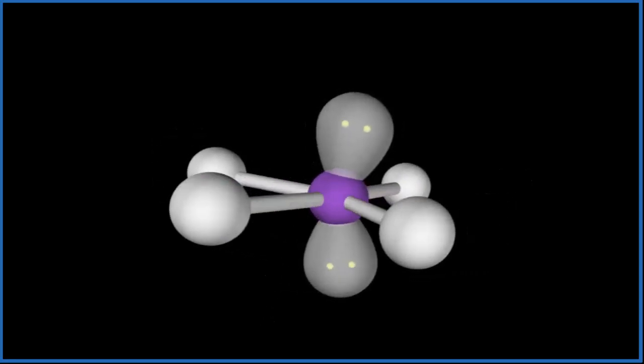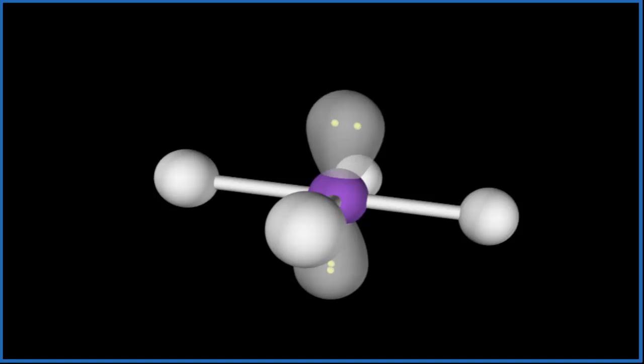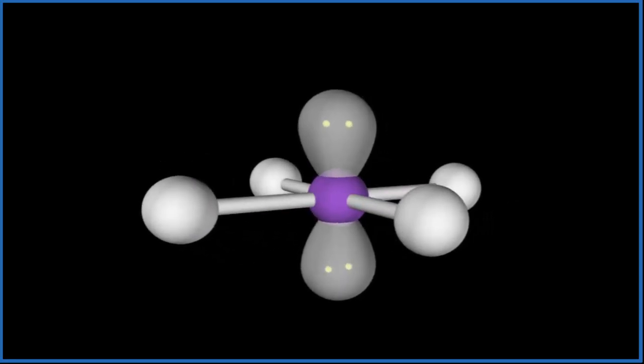This is called square planar. You can see the square with the fluorine atoms all in one plane, but we do have these two lone pairs that are kind of pushing them to the center there.